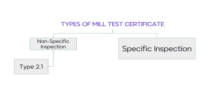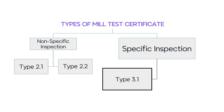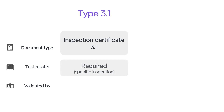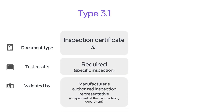Specific inspection is classified into two types: type 3.1 and type 3.2. Inspection certificate 3.1 is issued by the manufacturer, in which he declares that the products supplied are in compliance with the requirements of the order, along with specific test results. The document is validated by the manufacturer's authorized inspection representative, who is independent of the manufacturing department.